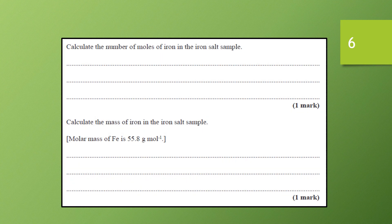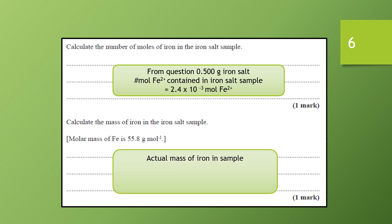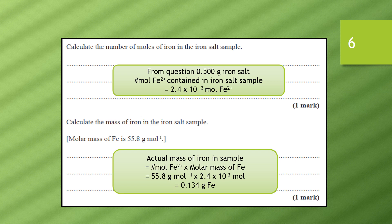Using the mole ratio of 1 to 6, the number of moles of iron is 2.4 × 10⁻³ moles — coming from the 0.5 gram iron salt sample. To calculate the mass of iron in the sample, we multiply the number of moles by the molar mass of iron, given as 55.8 g/mol. That gives us 0.134 grams of iron. So although we had a 0.5 gram iron salt sample, only 0.134 grams of it is iron, since the iron is combined with other things.